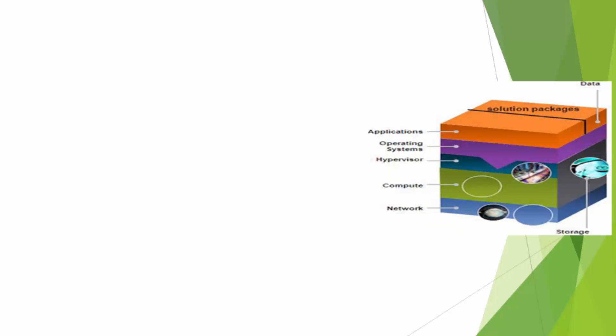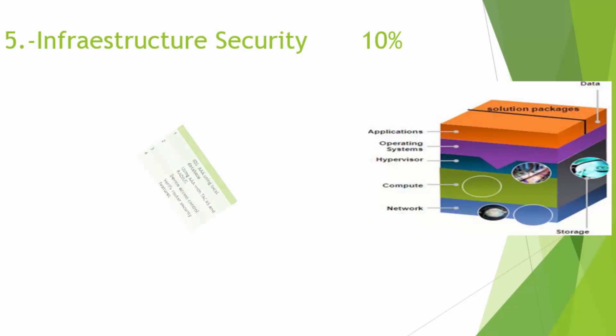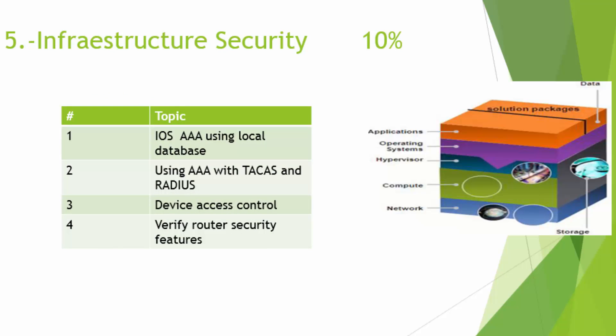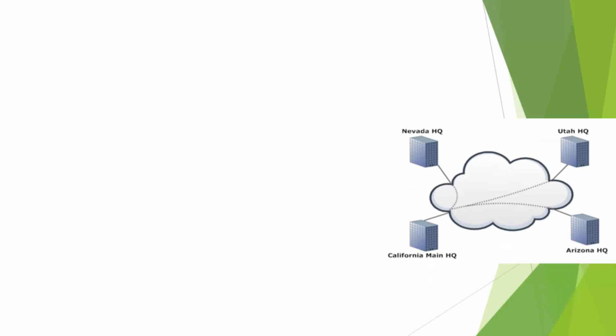And this is security. When talking about security, we are talking about different layers of security that people need to go through — for the network, for the computer, for the hypervisor, for the OS, and for the applications. Infrastructure security includes IOS AAA using local database, using AAA with TACACS and RADIUS, device access control, and verifying router security features. In this graphic you're going to see that you probably have different locations in different cities, or across the world — so how does that connect?